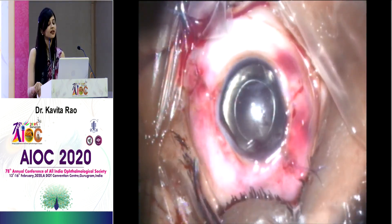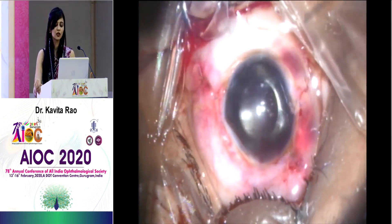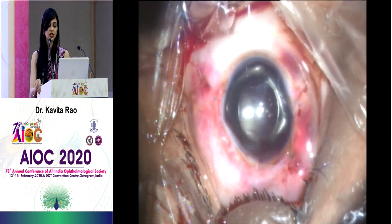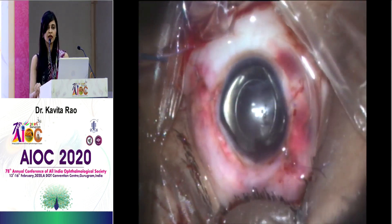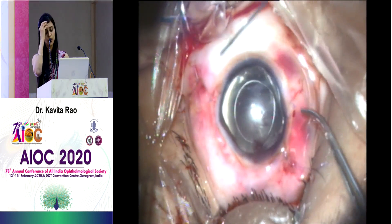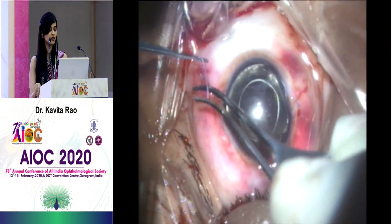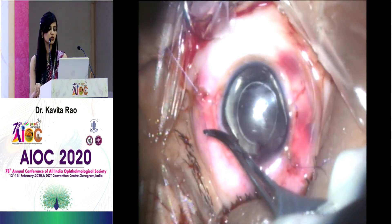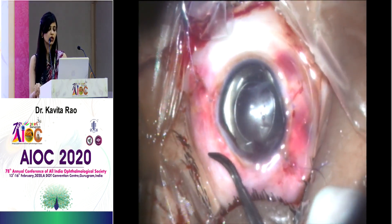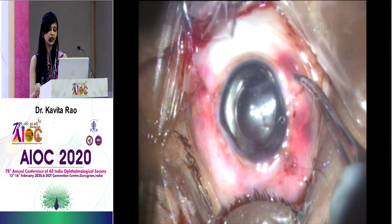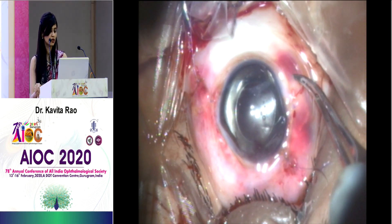This patient actually did really well — all his photophobia issues were resolved. Then the vitreoretinal surgeon took over for the ERM. The patient achieved a best corrected vision of around 6/80.